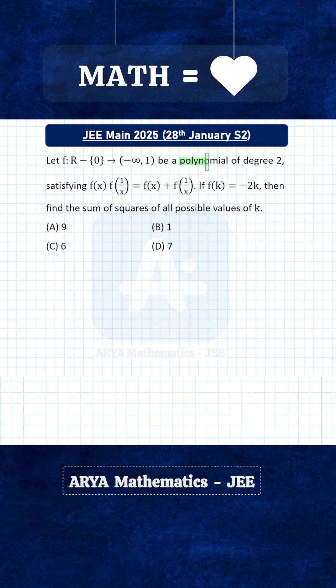Let f be a polynomial function of degree 2. The domain for f is all real except 0 and co-domain is minus infinity to 1. If it satisfies the functional equation f(k) = -2k, then we have to find the sum of squares of all possible values of k.